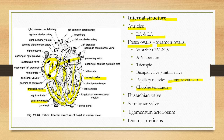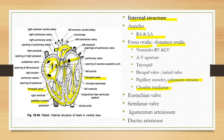From the right ventricle arises the pulmonary aorta, which has two branches — one goes to the right side and the other goes to the left side. From the left ventricle arises the carotico-systemic aorta.